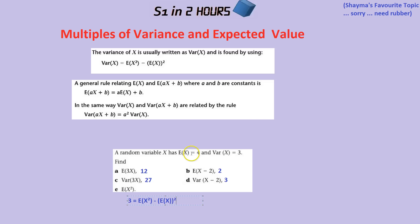E of X we've been told in the question is 4. So E of X squared is 16, which is not the same thing as E of X squared. So 3 equals E of X squared, which is what we're trying to find out, take away 16, which is 4 squared because the E of X is 4. Add 16 to both sides. 19 is the answer for E of X squared.